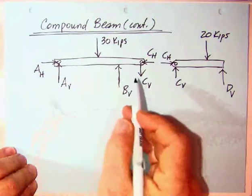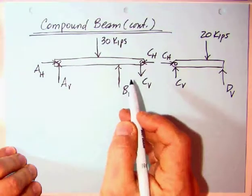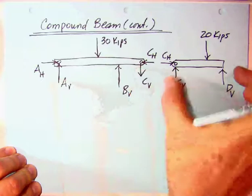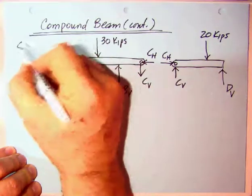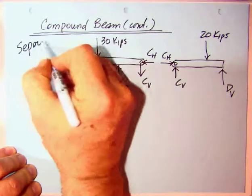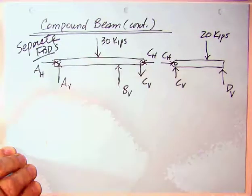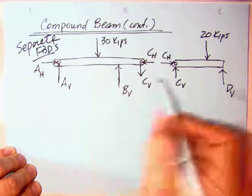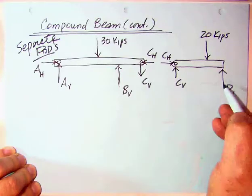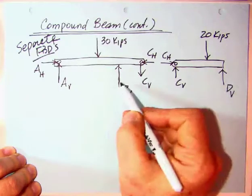Okay, so we've now separated the compound beam into its two pieces. The piece AC and then the piece CD. So we would call these the separate free body diagrams.